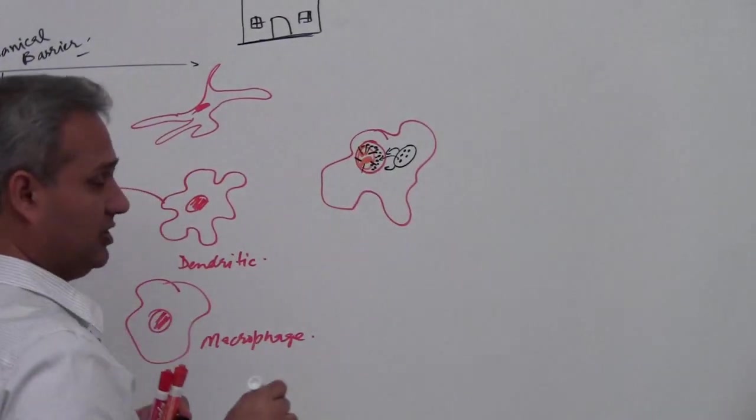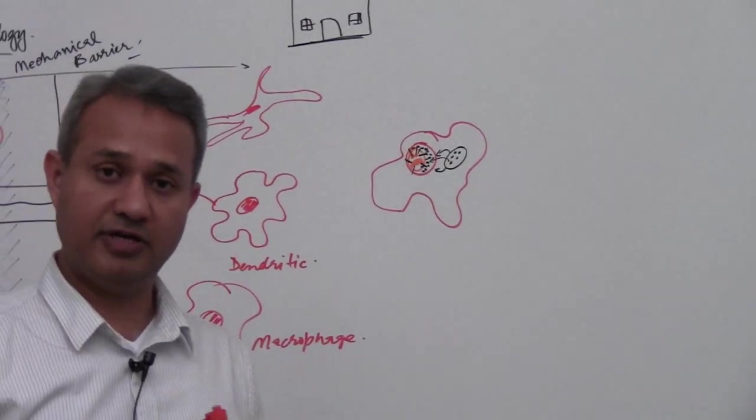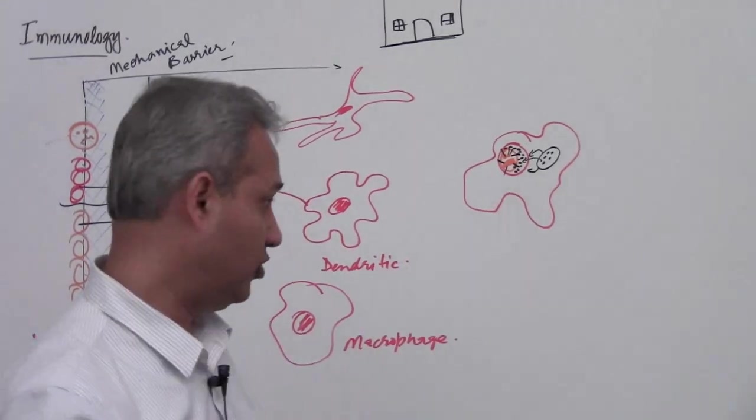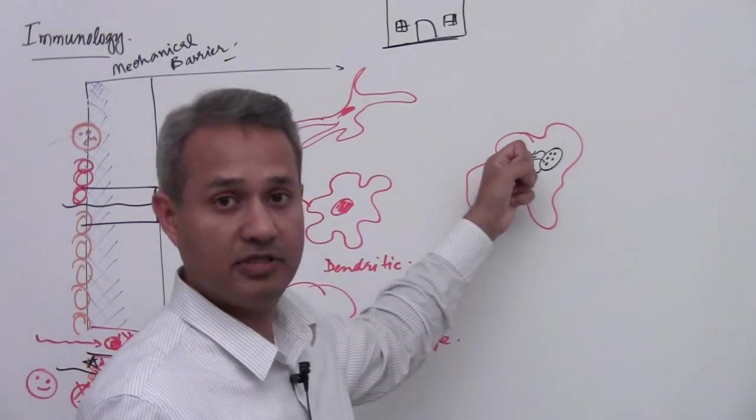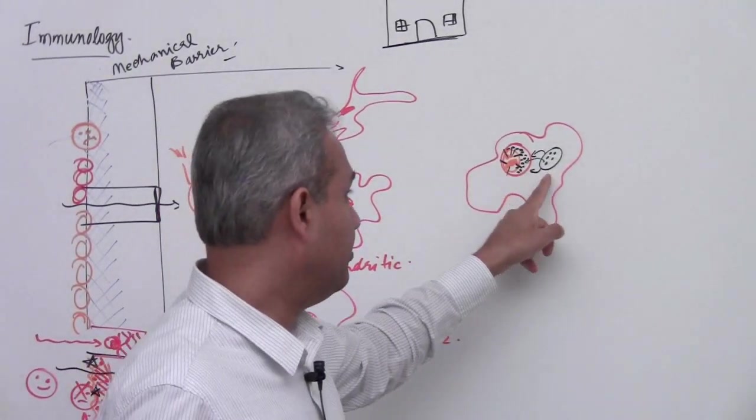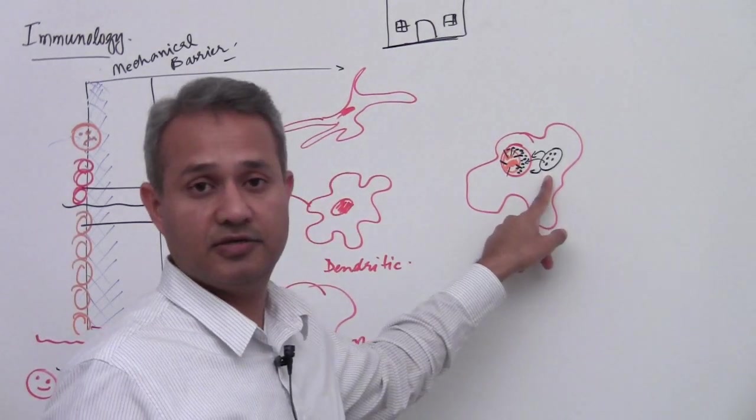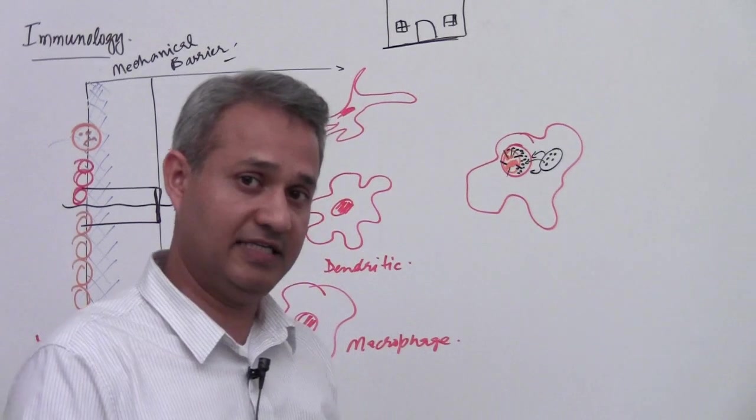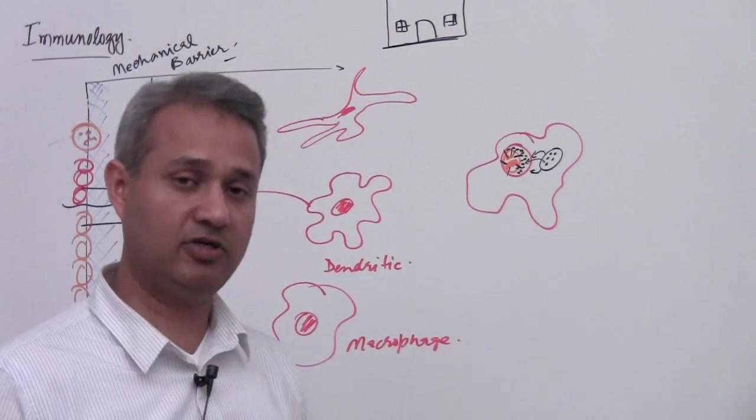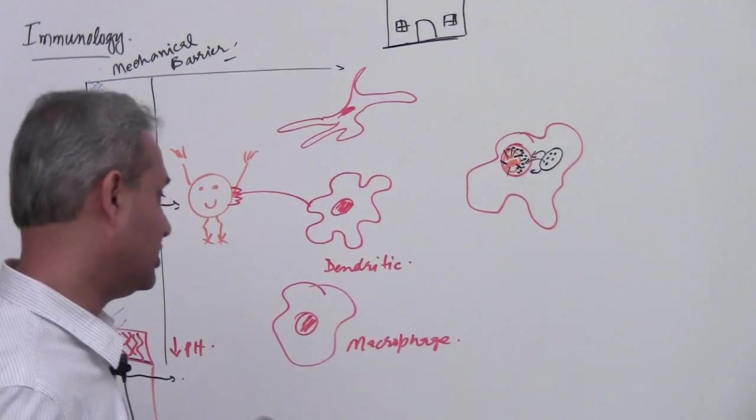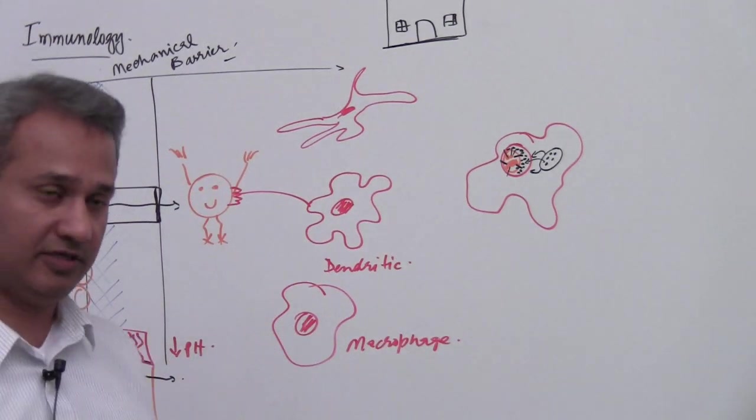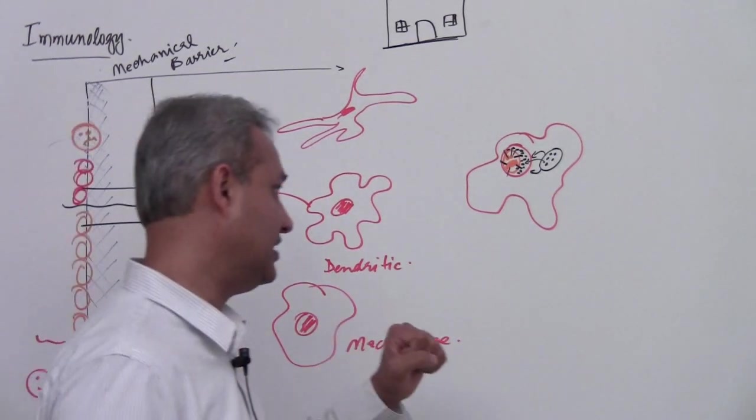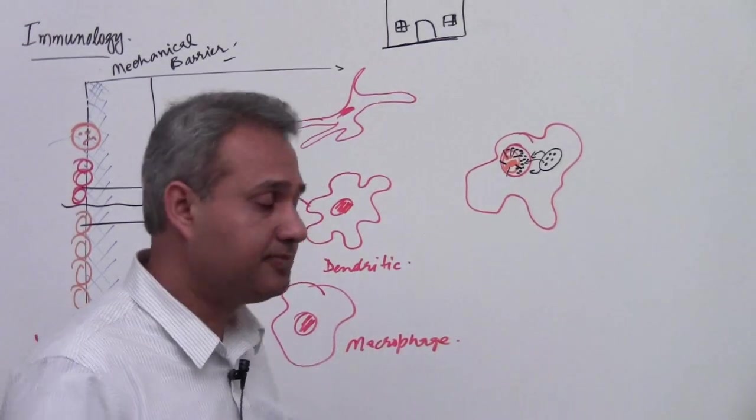So this pathogen is really unhappy. So what the phagocyte did was, he ate up the bacteria, then combined the vacuoles or vesicles which have digestive enzymes in it. And again, we will talk in detail that neutrophil has one type and macrophages have another and dendritic cell has another and B cell has something. So the end result is the same.